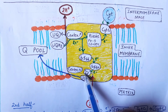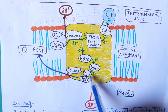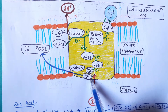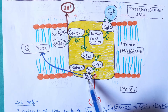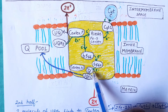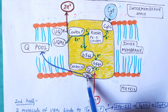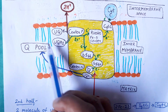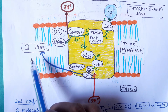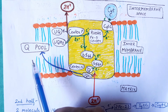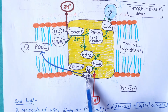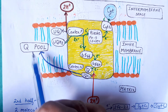When the semiquinone at center N accepts this second electron, it gets converted into ubiquinol. This ubiquinol then moves out into the Q pool — the pool of ubiquinone and ubiquinol molecules present within the hydrophobic core of the membrane — and the cycle continues.